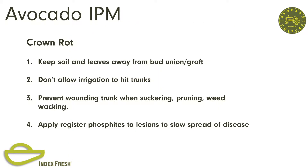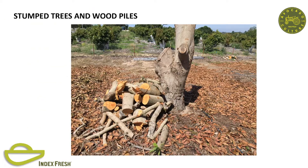Crown rot prevention: keep the soil and leaves away from the bud union and the graft. Don't allow irrigation to hit the trunks—if the trunk stays wet for over 24 hours, it can allow entry of the pathogen into the tree trunk, even without a wound. Prevent wounding when suckering, pruning, or weed whacking. You can apply registered phosphites to slow the spread of the disease. You can see stump trees there with good leaf flush—this is what you're trying to do when you stump, create this big leaf flush that allows you to go back to foliar phosphite therapy for root rot, and you'll come back into production fairly quick with a large root mass.